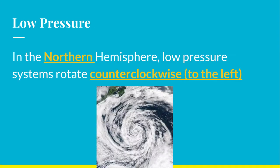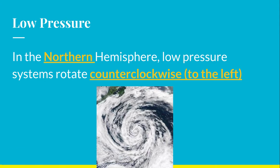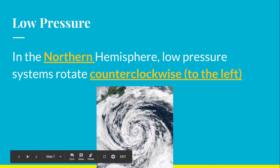Low pressure in the northern hemisphere is going to rotate counterclockwise — so to the left. So low to the left. Now you might recognize this picture as a hurricane, which is exactly what it is. The reason I put this on here — all hurricanes in the northern hemisphere rotate to the left, and that's because they're great big systems of low pressure, so they are going to rotate like that.